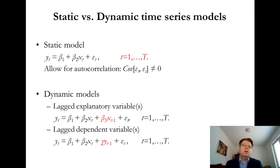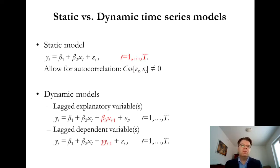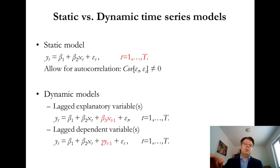We can have different time periods entering the regression equation, either by means of lagged x variables, as in the first equation of the dynamic models, or we can also have the lagged value of the dependent variable y in period T minus 1 as one of the explanatory variables. When these connections between different time periods are modeled explicitly as part of the regression equation, I refer to it as the dynamic model.